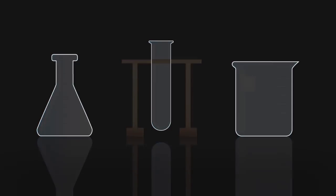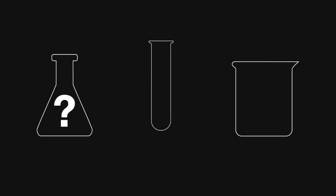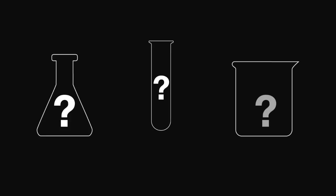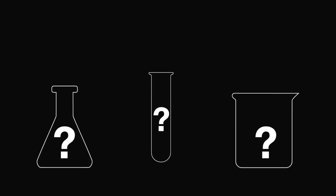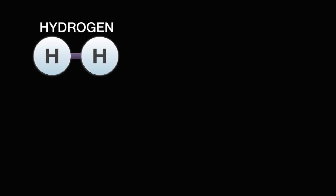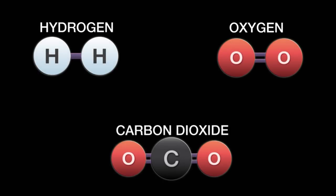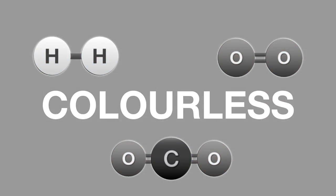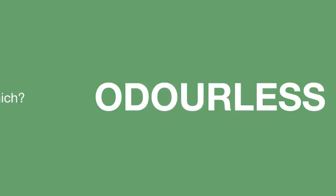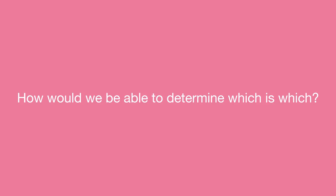We test for gases in the laboratory because it is nearly impossible to determine the identity of a gas just by its appearance. As an example, hydrogen, oxygen, and carbon dioxide are all colorless and odorless. How would we be able to determine which is which?